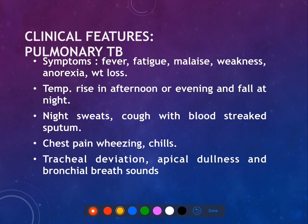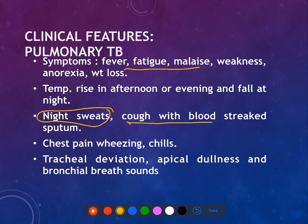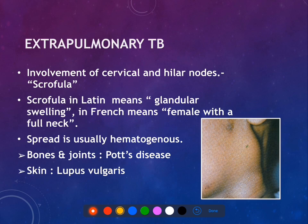Clinical features of pulmonary tuberculosis include prodromal symptoms like fever, fatigue, and malaise. The patient may have night sweats, along with a cough with blood-streaked sputum, and chest pain. Tracheal deviation and dull bronchial breath sounds can be heard. Extrapulmonary tuberculosis occurs in other systems; cervical and hilar lymph node involvement is called scrofula. Bone and joint involvement is called Pott's disease, and kidney involvement is called lupus vulgaris.